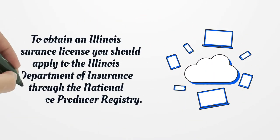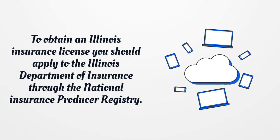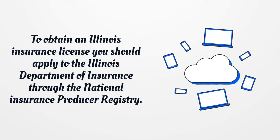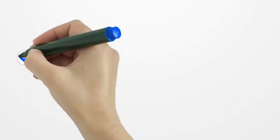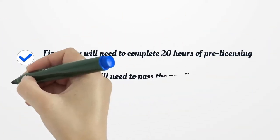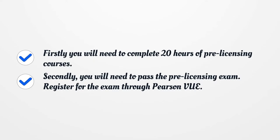To obtain an Illinois Insurance License, you should apply to the Illinois Department of Insurance through the National Insurance Producer Registry. Firstly, you will need to complete 20 hours of pre-licensing courses. Secondly, you will need to pass the pre-licensing exam. Register for the exam through Pearson VUE.